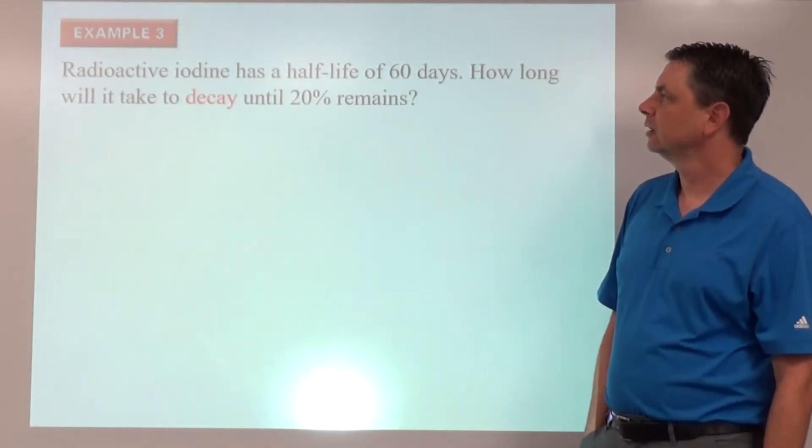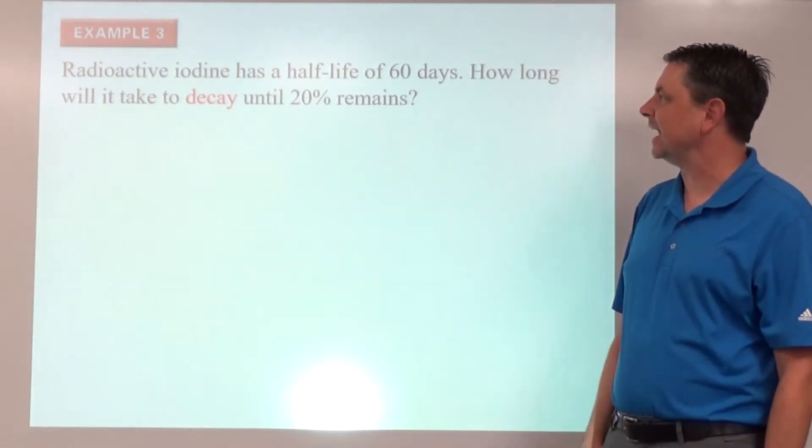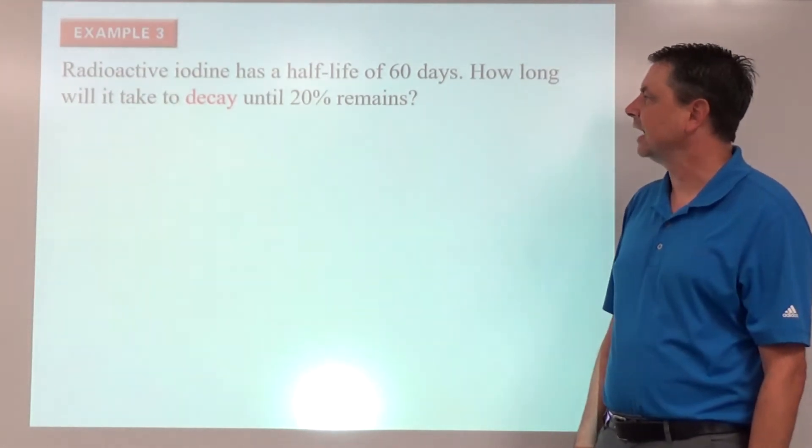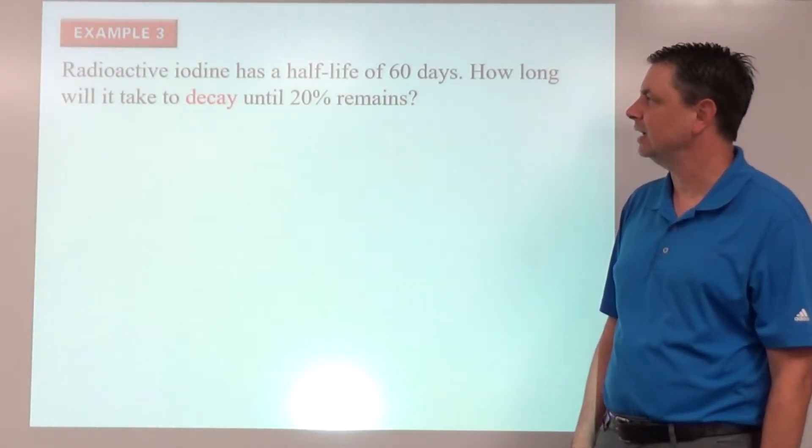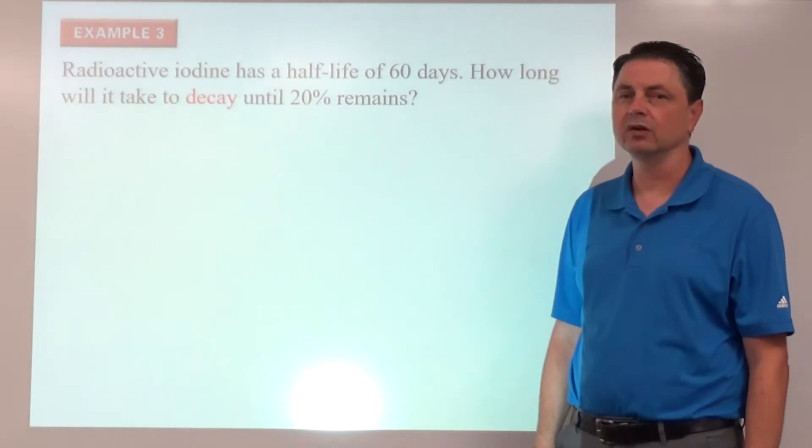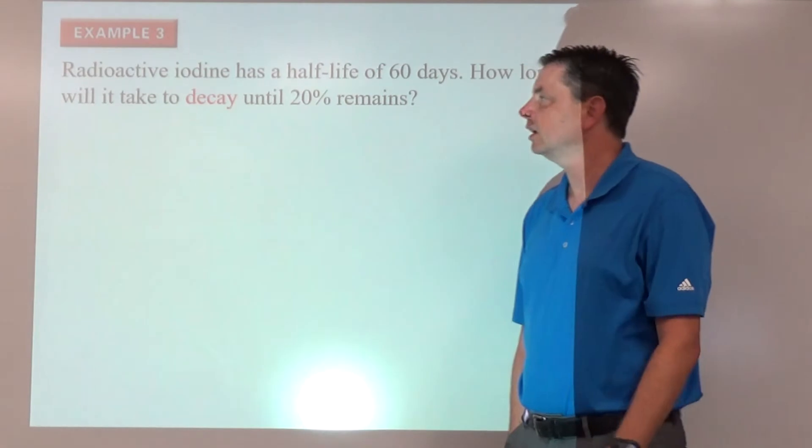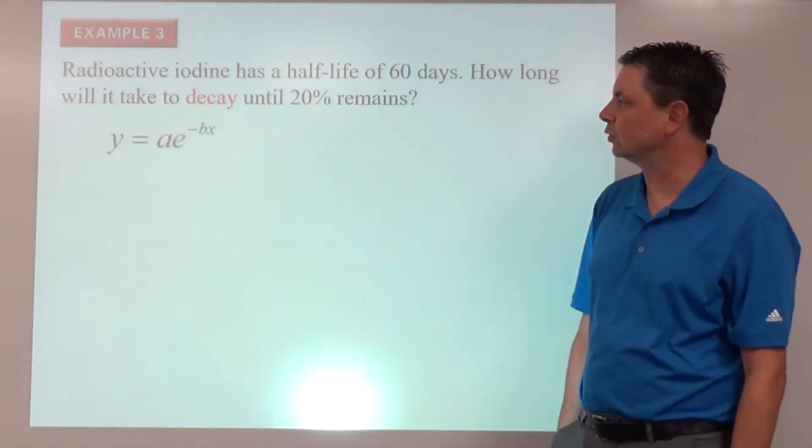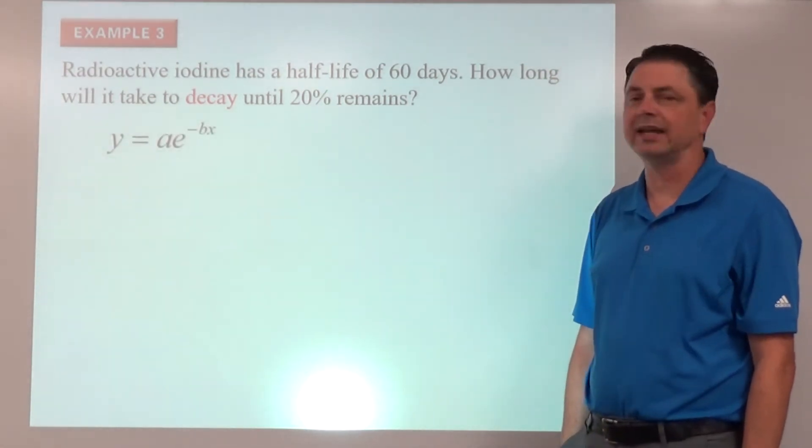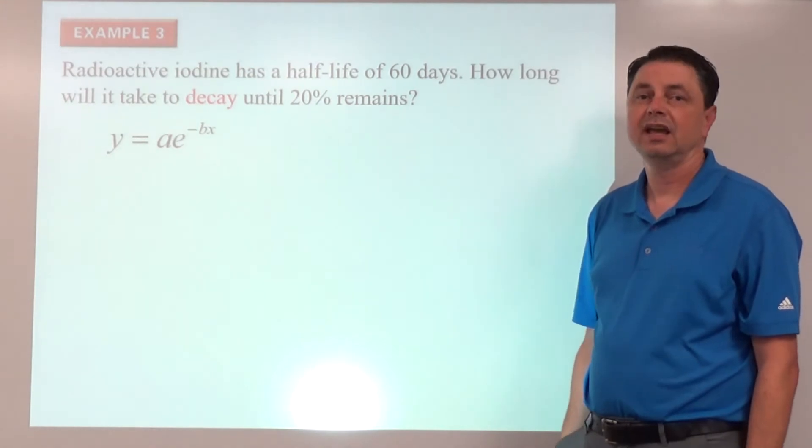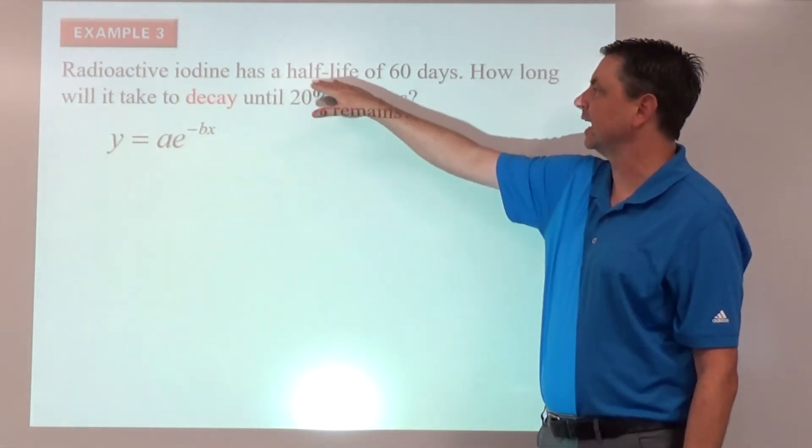Example number 3. Radioactive iodine has a half-life of 60 days. How long will it take to decay until 20% remains? So this is a decay situation. So we're going to use y equals a times e to the negative bx. And we're going to start with the half-life situation.